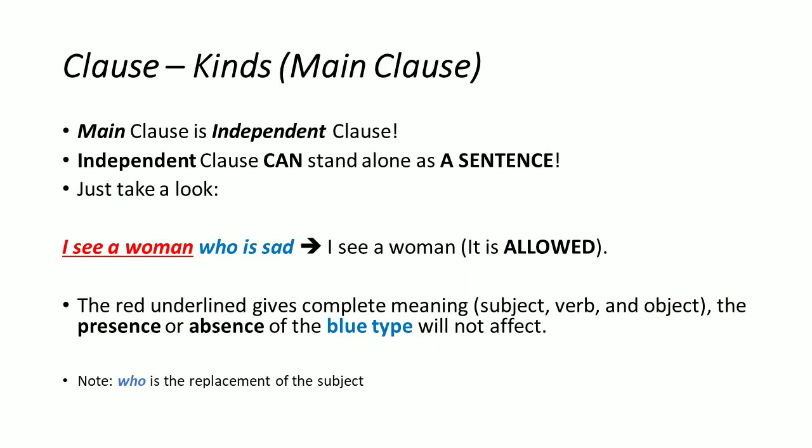Now talking about the types of clause: a main clause is an independent clause. An independent clause can stand alone as a sentence. To make it simple, take a look at this example: 'I see a woman who is sad.' There are two clauses — 'I see a woman' is the independent clause, and 'who is sad' is the dependent clause.